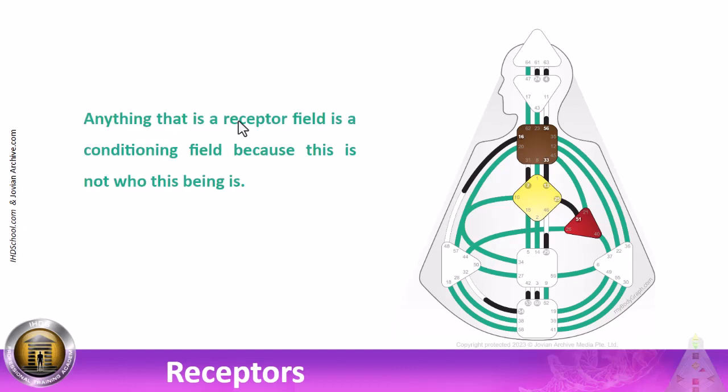Anything that is a receptor field is a conditioning field because this is not who this being is. You have receptivity there, meaning you will never broadcast consistently there, meaning you can never trust as an authority for you to make decisions any place that you have a totally open receptor field. Now, you can learn wisdom. You can learn wisdom about others.